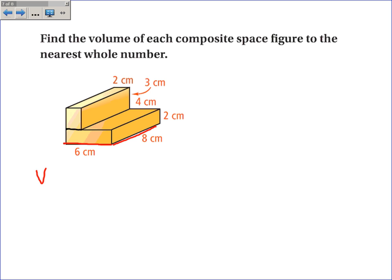And the volume of the bottom piece is area of the base times the height. The area of the base is 6 times 8, or 48, times the height is 2, and I get 96 cubic centimeters. That's this bottom piece.